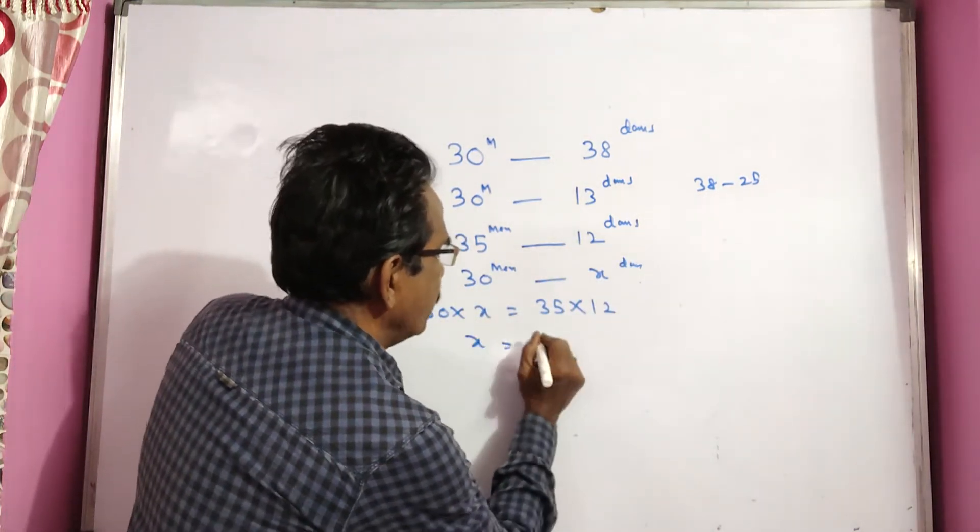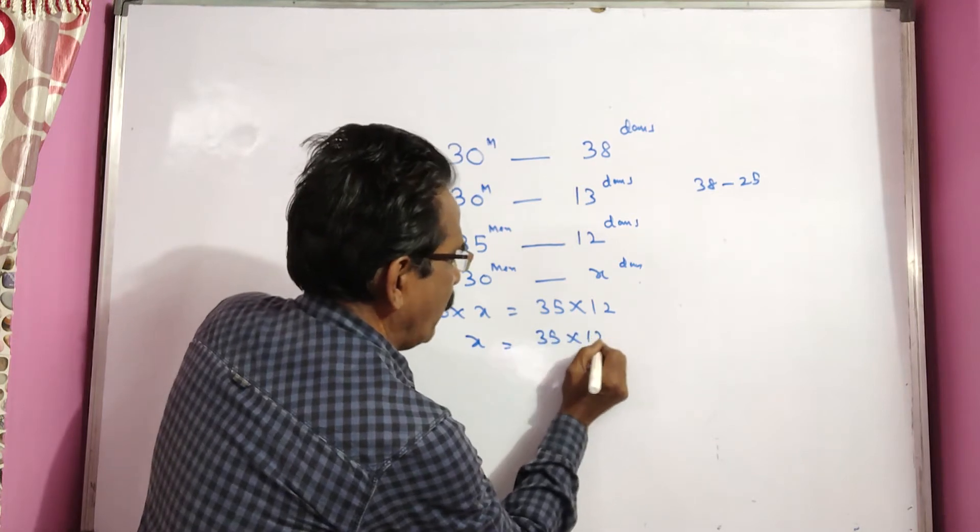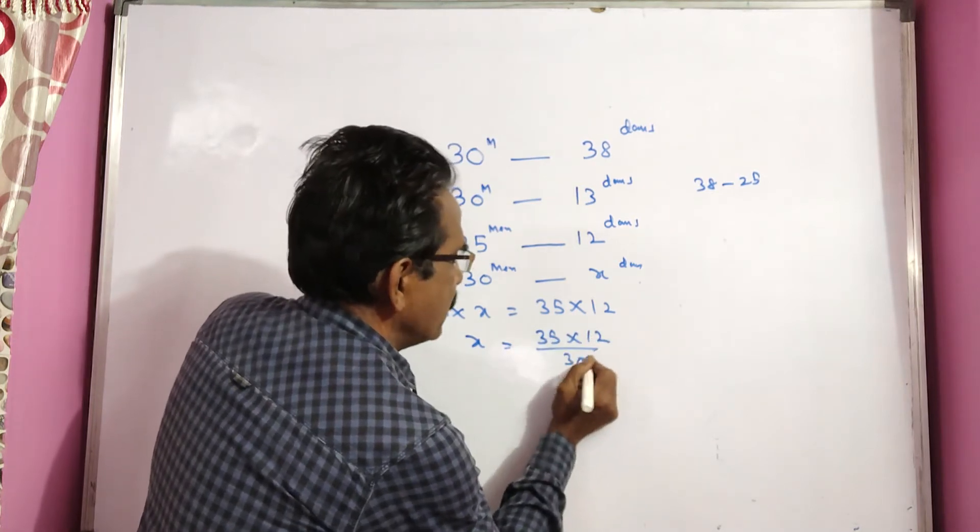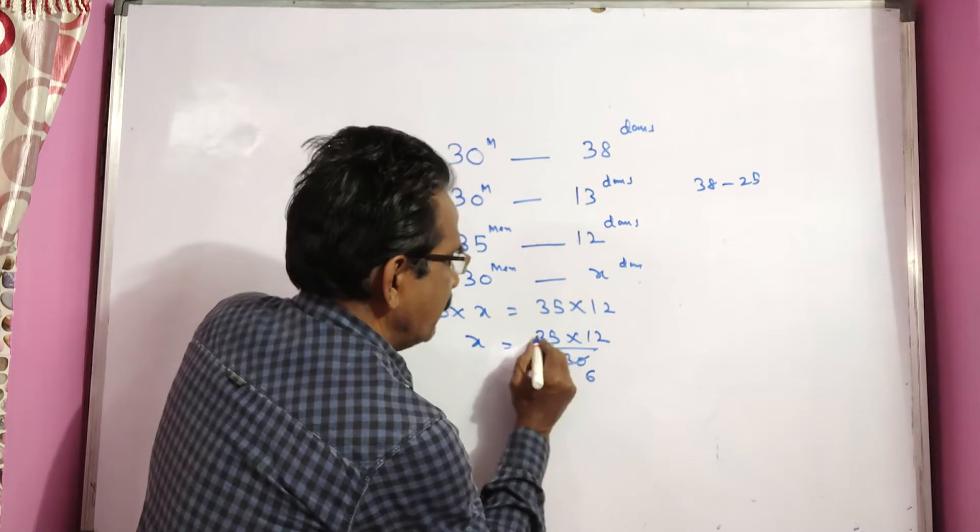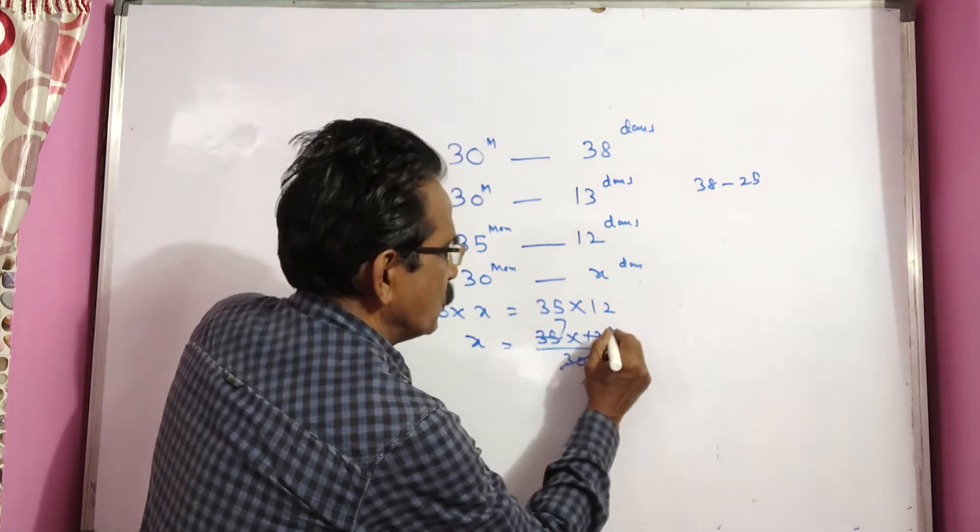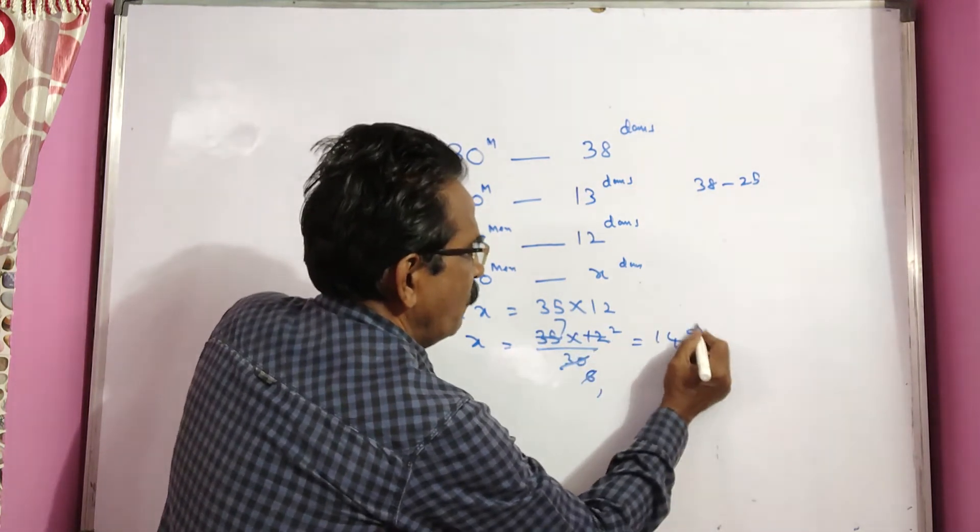Now let us find x. 35 into 12 by 30: 5 sixes, 5 sevens, 6 ones, 6 twos, 7 twos, equals 14 days.